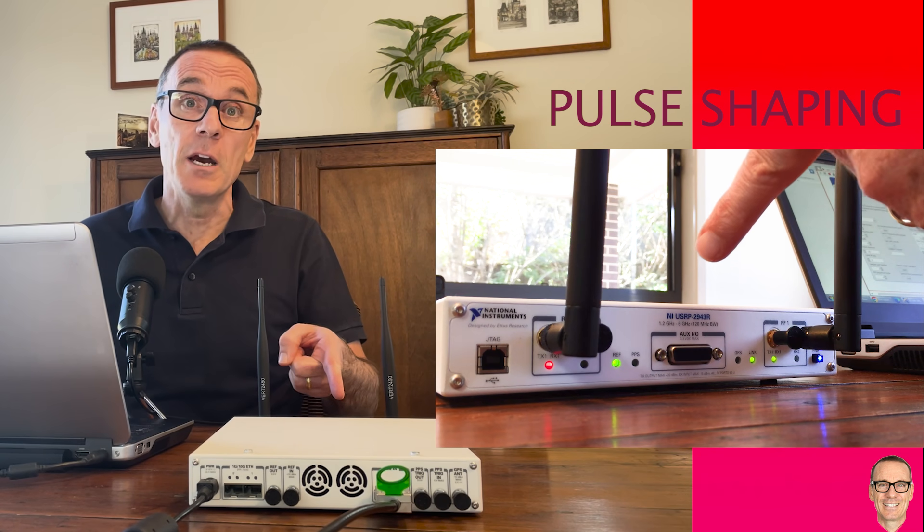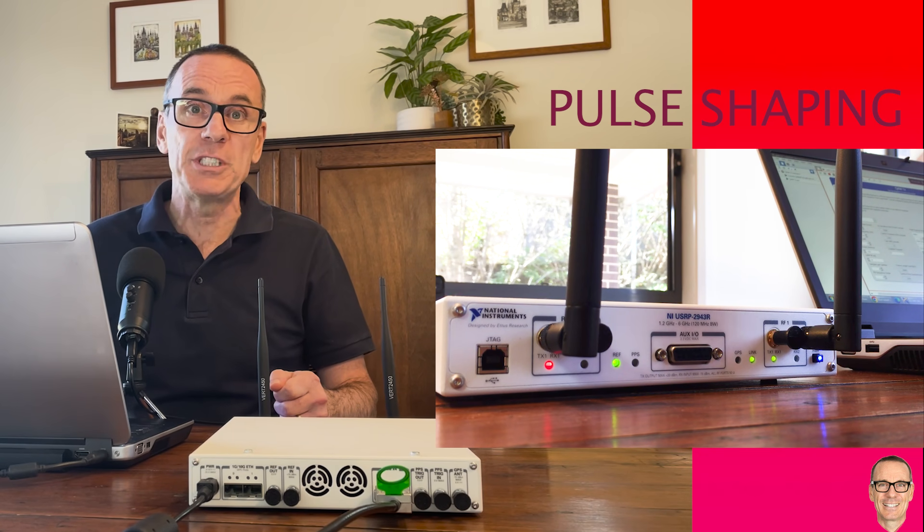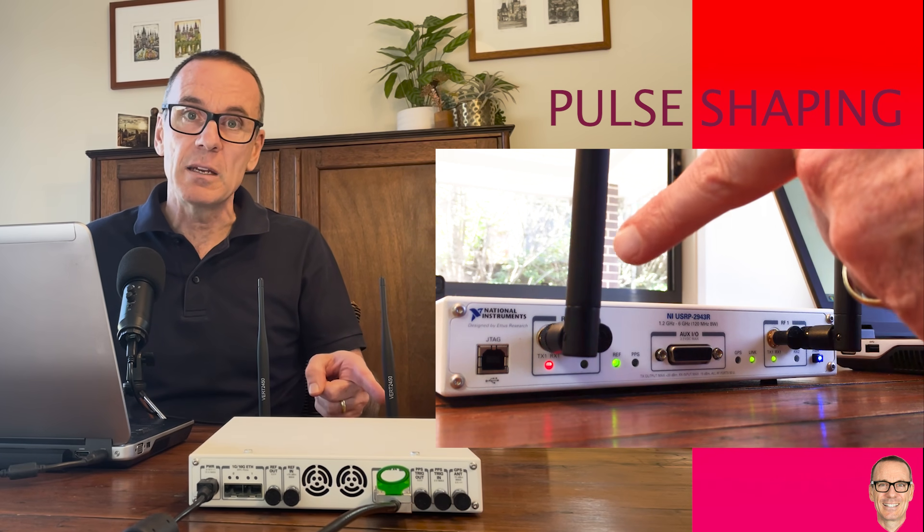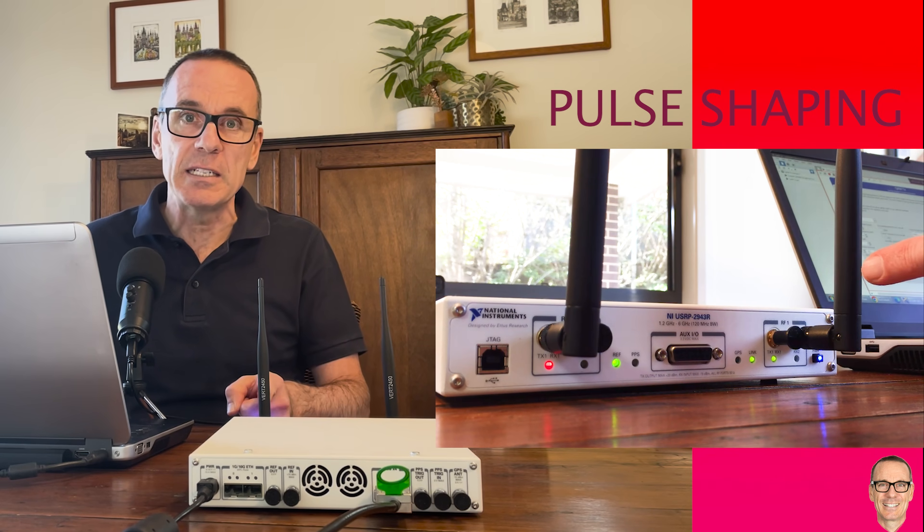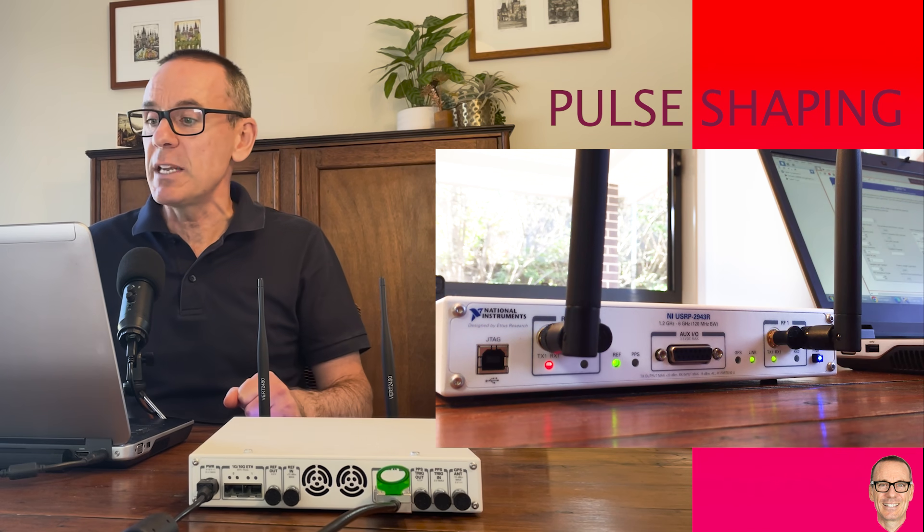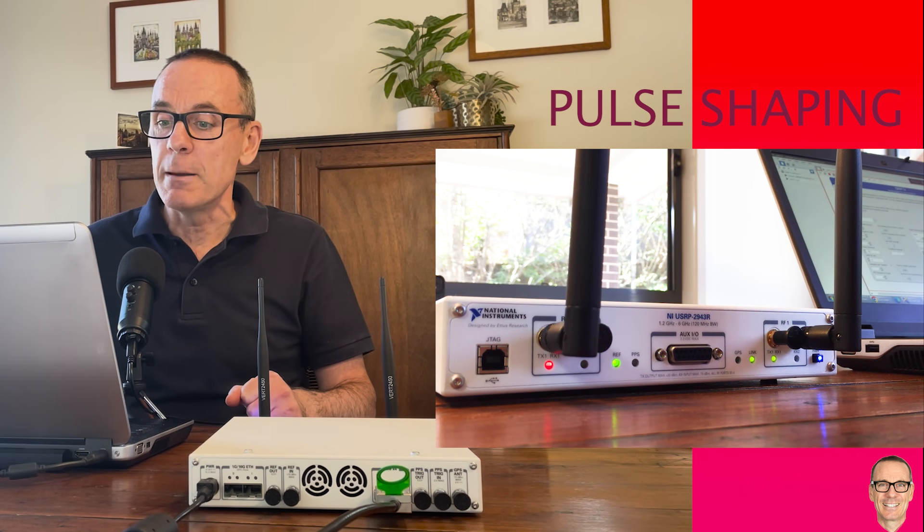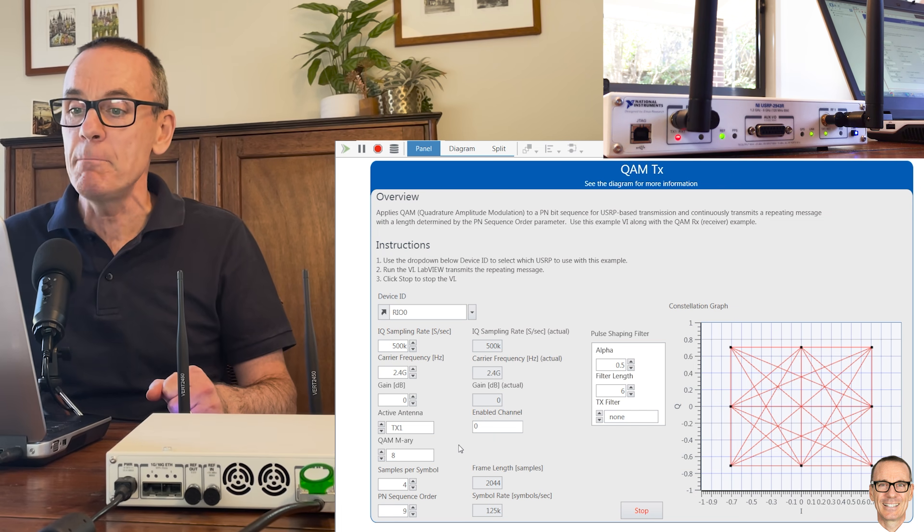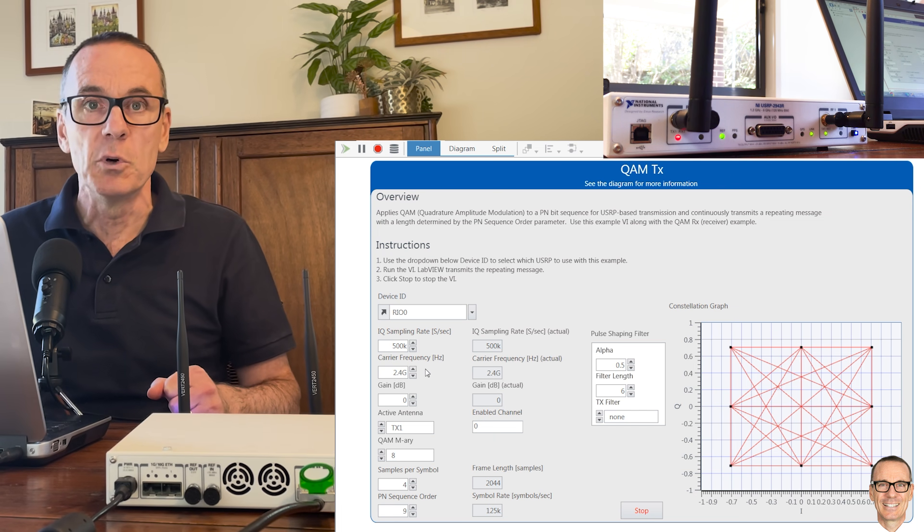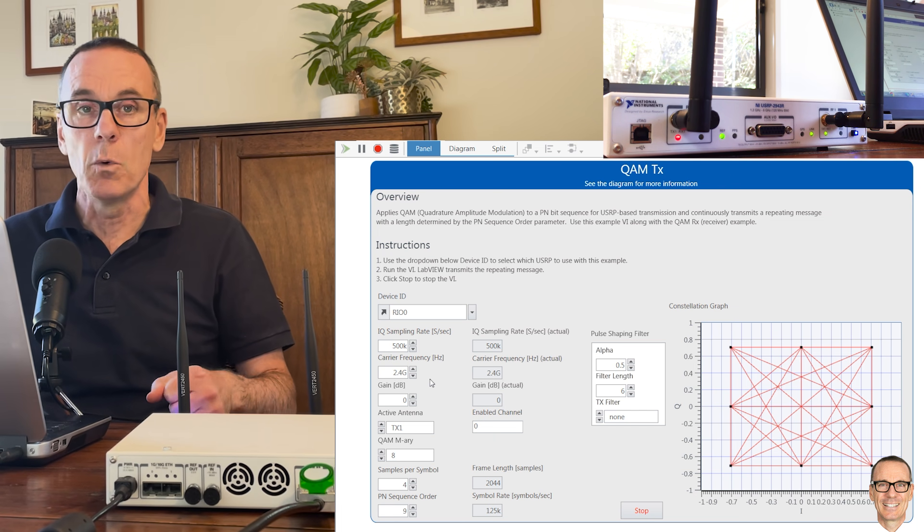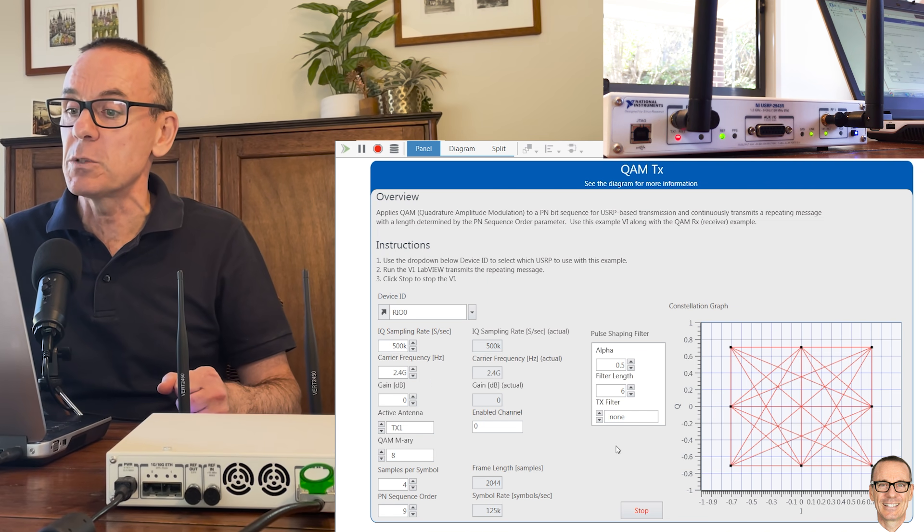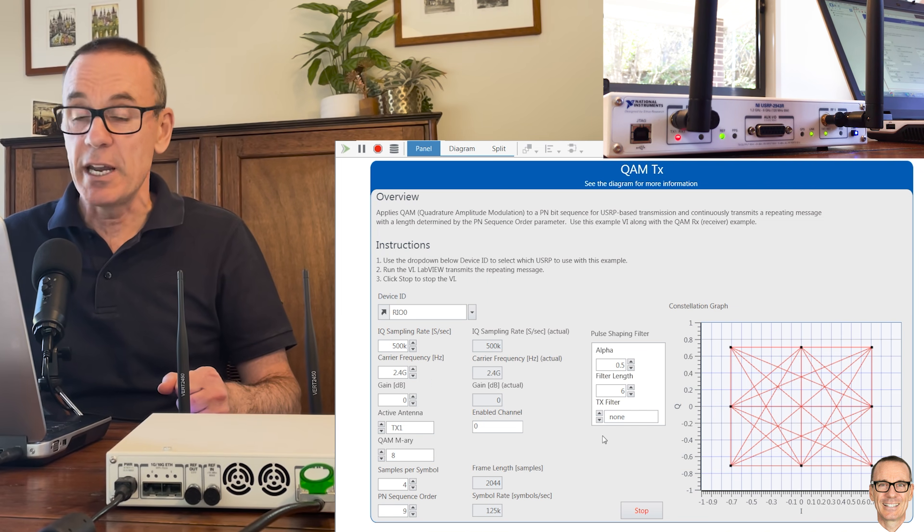I'm going to use this software-defined radio to help you visualize pulse shaping in digital modulation. I've got a transmit antenna here and a receive antenna here and we are transmitting 8QAM. We can see in the software here it shows an 8 for the QAM and we're transmitting at 2.4 gigahertz right in the wi-fi band.